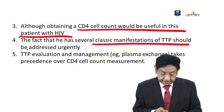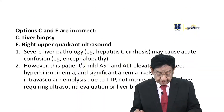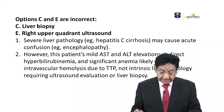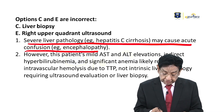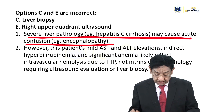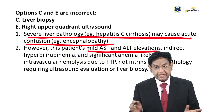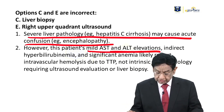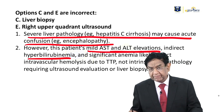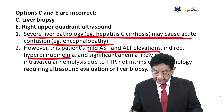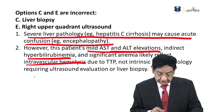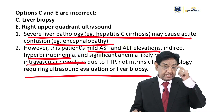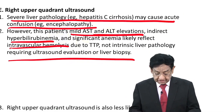The classic TTP presentation should be addressed urgently. Options C and E — liver biopsy and right upper quadrant ultrasound — are not appropriate here. Severe liver disease can cause acute confusion and encephalopathy; however, the patient's AST and ALT elevation is minimal and nearly normal. Even the indirect bilirubin is only mildly raised, more consistent with hemolysis. So there is no point doing an ultrasound or liver biopsy as the first investigation.